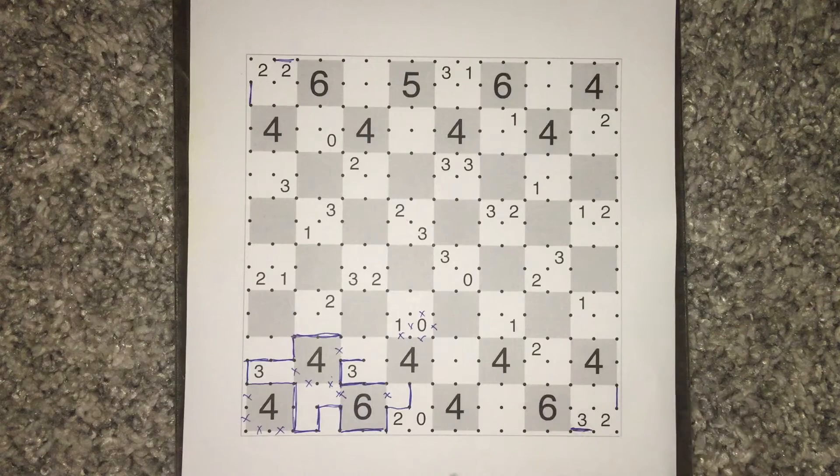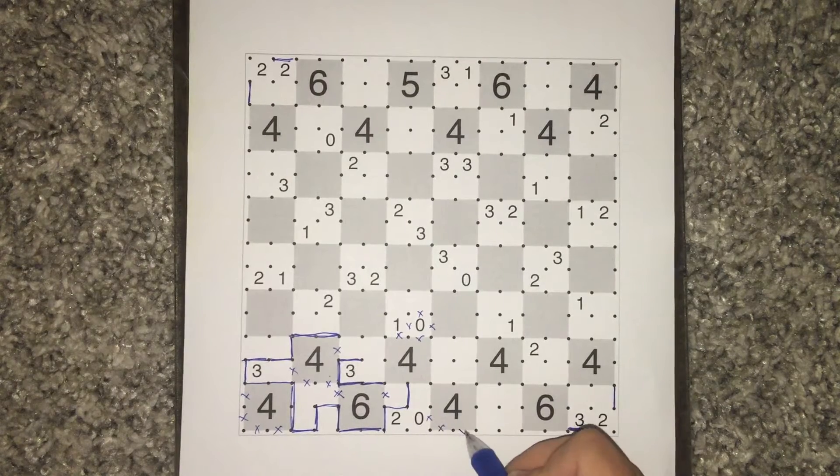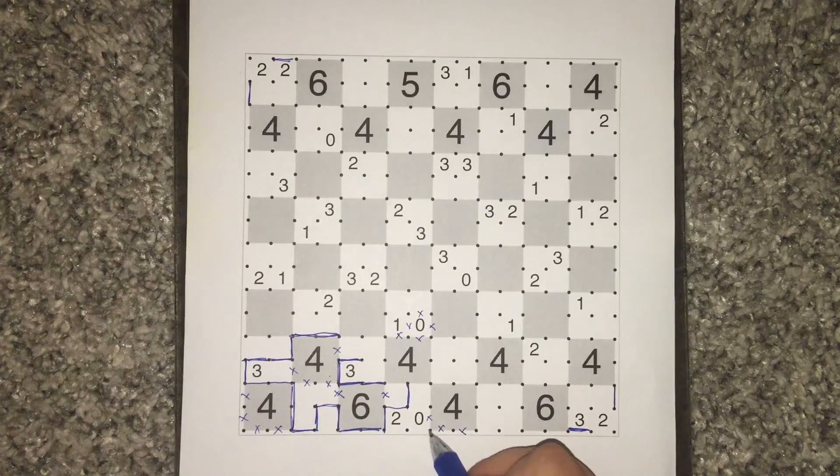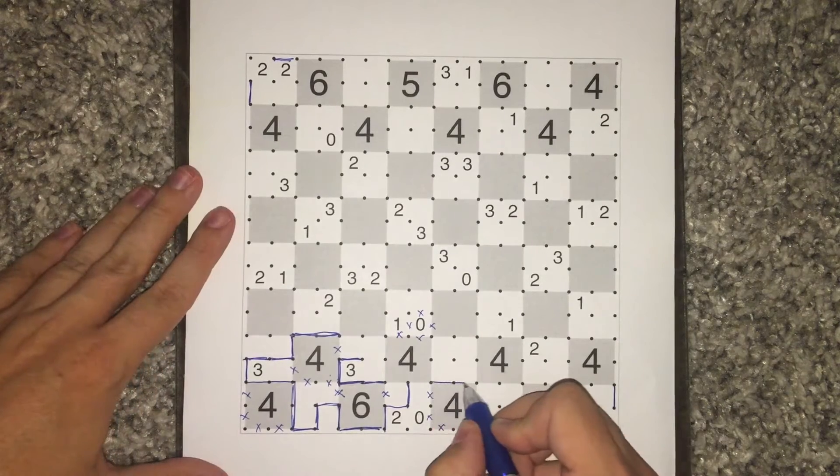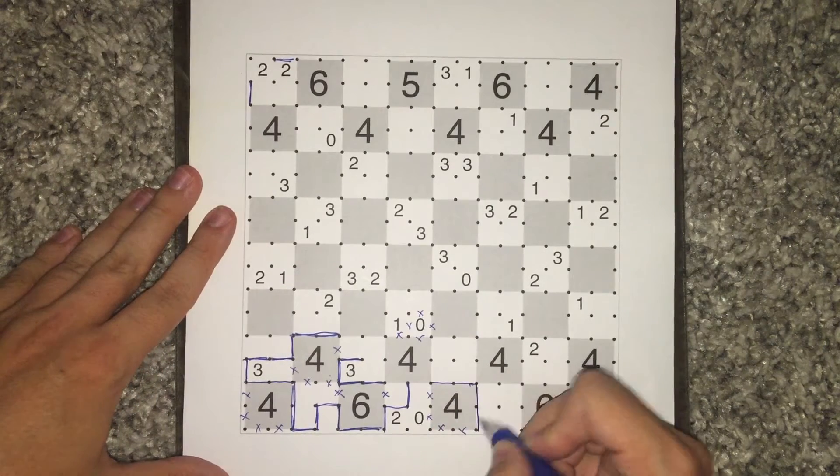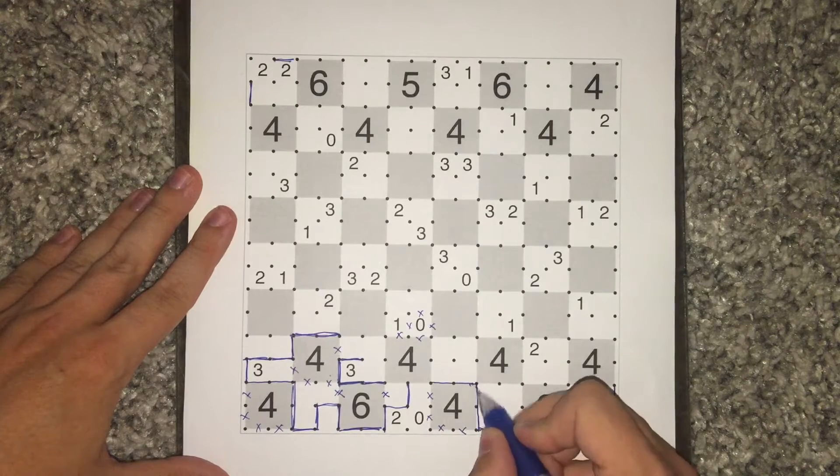Once again, we can see this four, because of the zero down here is also like a corner four, and has to use a full wrapping, like so.